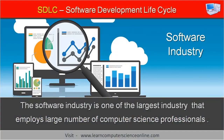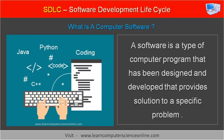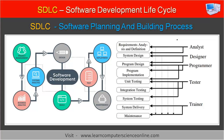The software industry is one of the largest industries that employs a large number of computer science professionals. A software is a type of computer program that has been designed and developed to provide a solution to a specific problem. Software is also alternately referred to as a software package. However, developing any software is not easy, and the software design team has to plan and execute many activities to achieve the desired results.